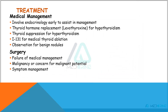What is the treatment for thyroid nodules and thyroid tumors? Treatment can be classified into either medical or surgical management. In medical management, we involve endocrinologists to assist. Thyroid hormone replacement can be done for hypothyroidism, and in cases of hyperthyroidism we do thyroid suppression. We do radioiodine therapy for medical thyroid ablation and observation for thyroid nodules. If medical management fails, or if there is malignancy or concerns for malignant potential, we move to surgical management.